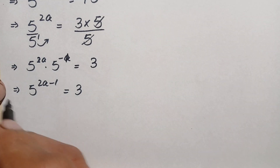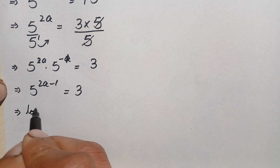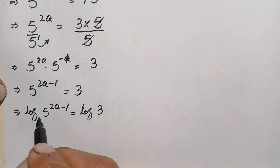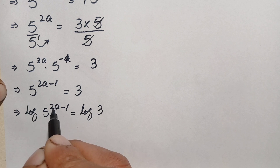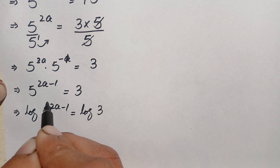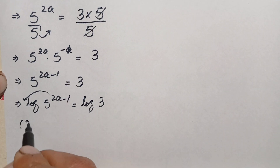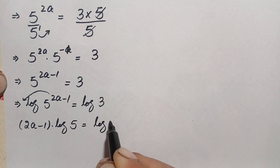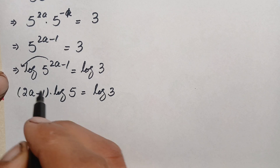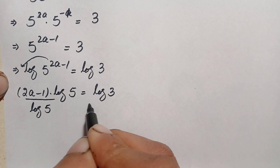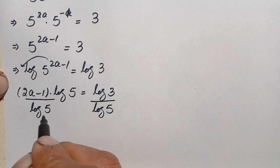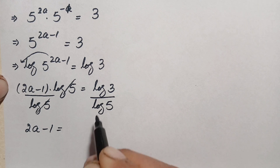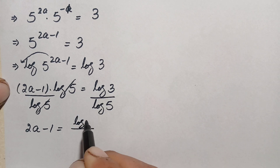Now we take the common log on both sides. This equation becomes log of 5 raised to power 2a minus 1, equal to log of 3. On the left hand side we use the identity log of a raised to power n equals n times log of a. So we move the power to the front: 2a minus 1 times log of 5, equals log of 3. Then we divide both sides by log of 5 to eliminate it from the left hand side. So 2a minus 1 equals log of 3 divided by log of 5.